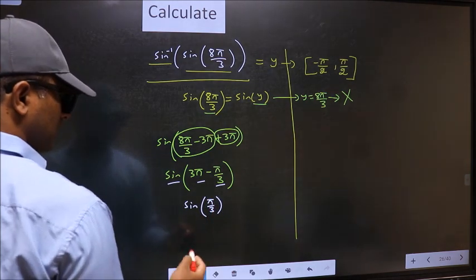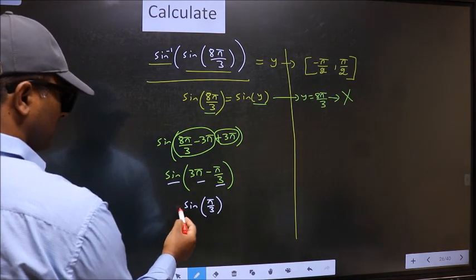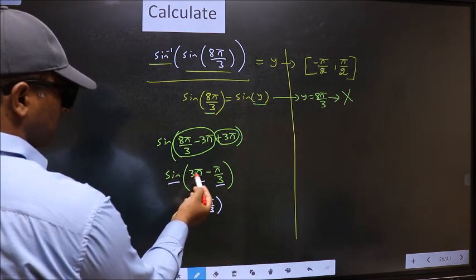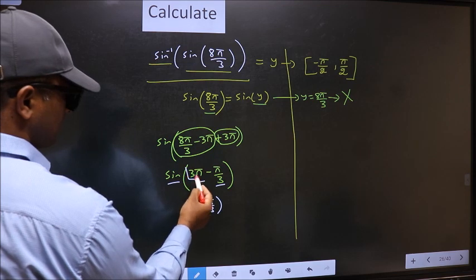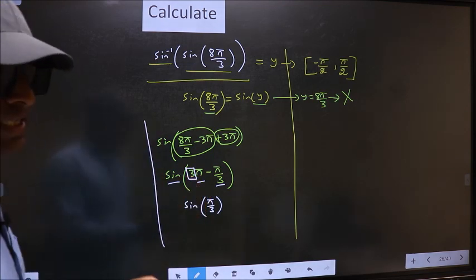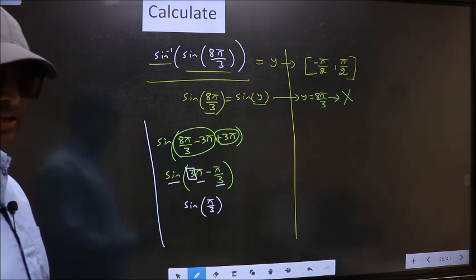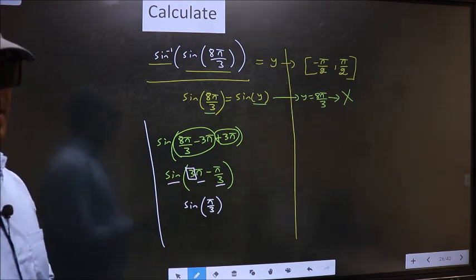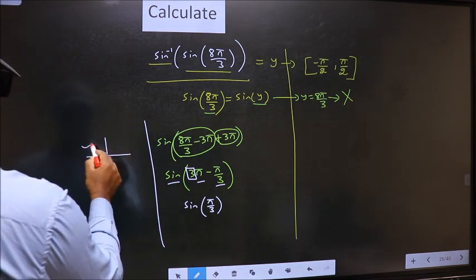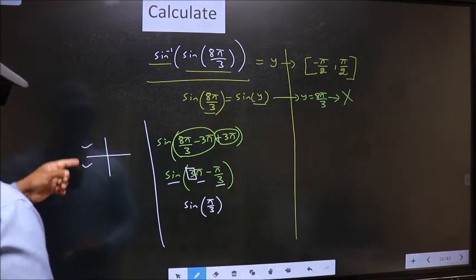Now the question is, will we get here plus or minus? To answer that, we should look at the number before π, which is 3. And 3 is odd. And all the odd multiples of π lie in either the second or the third quadrant.